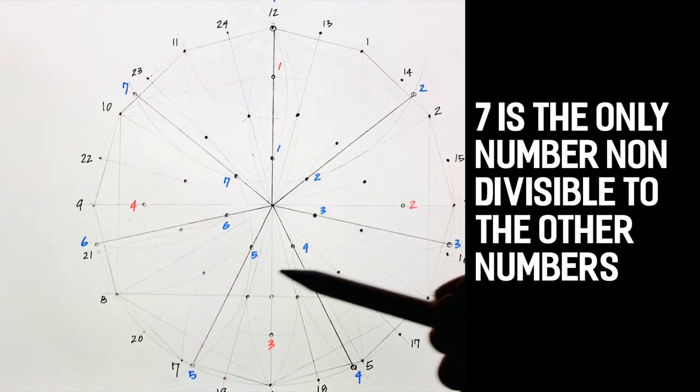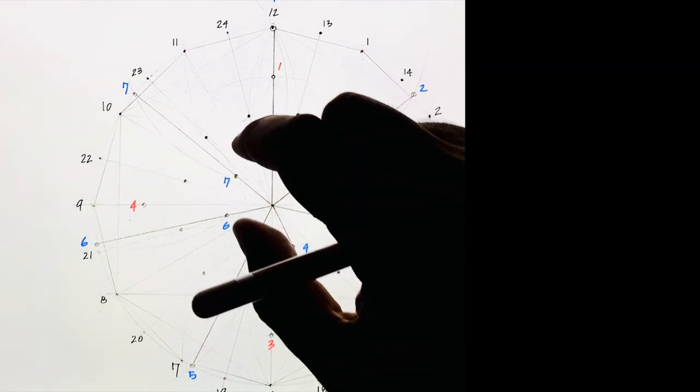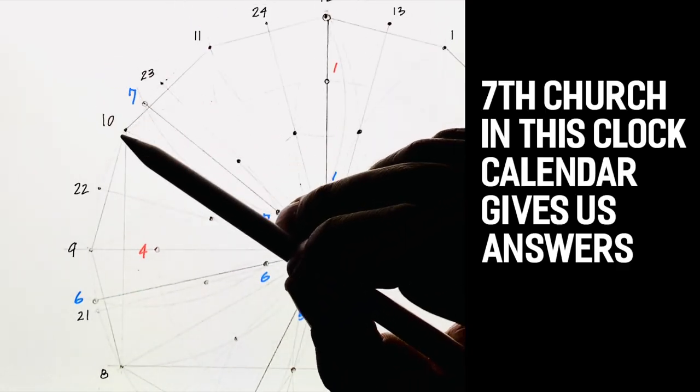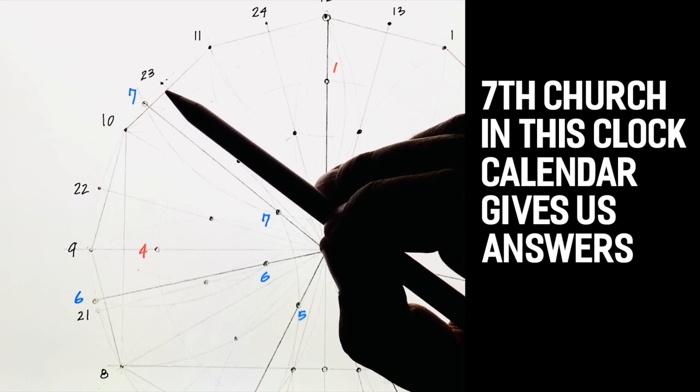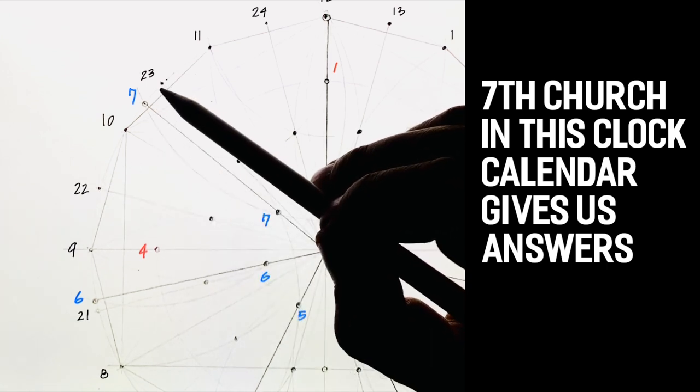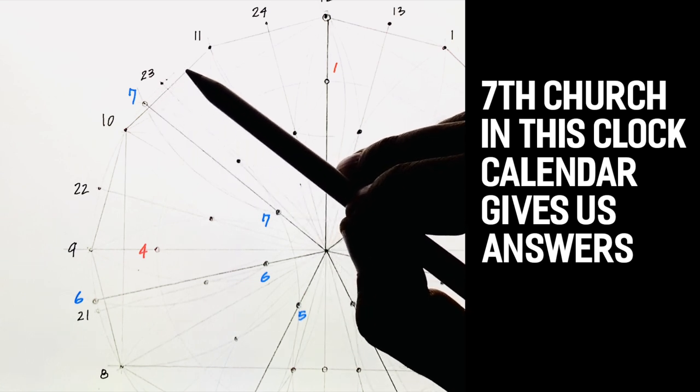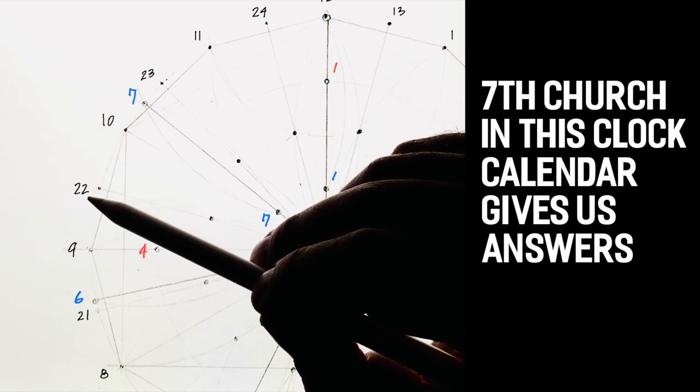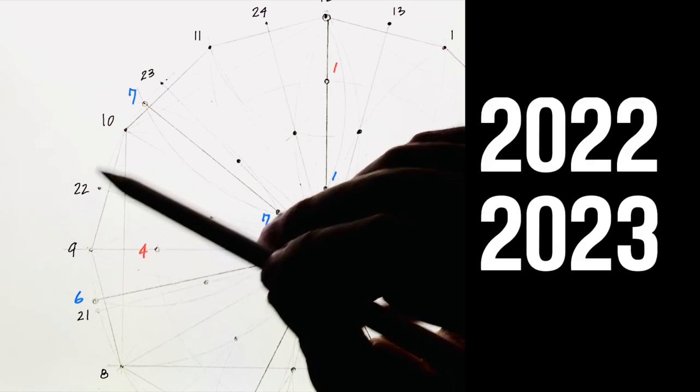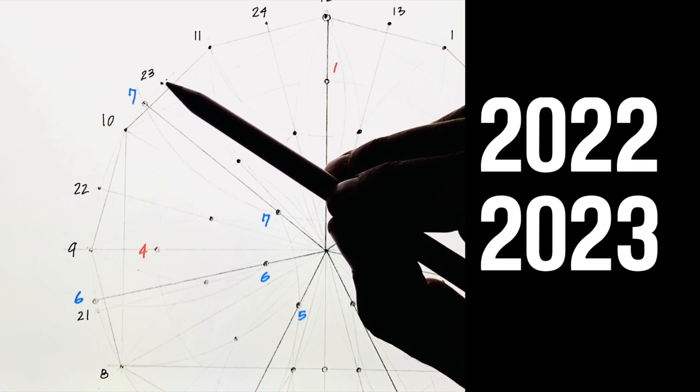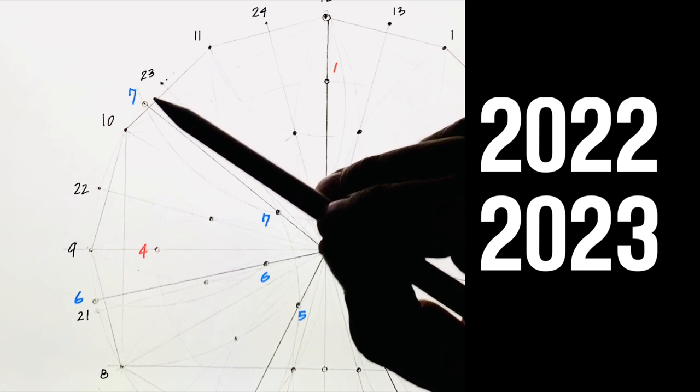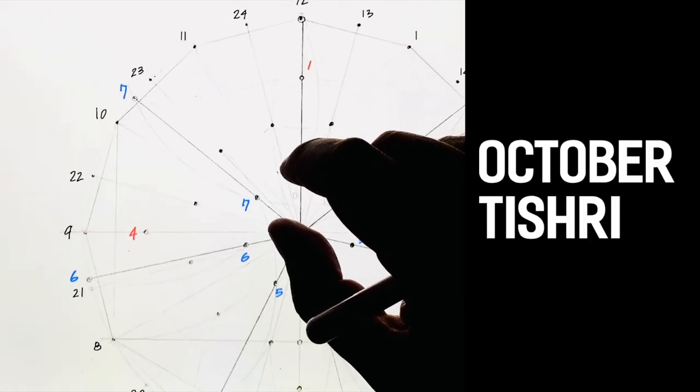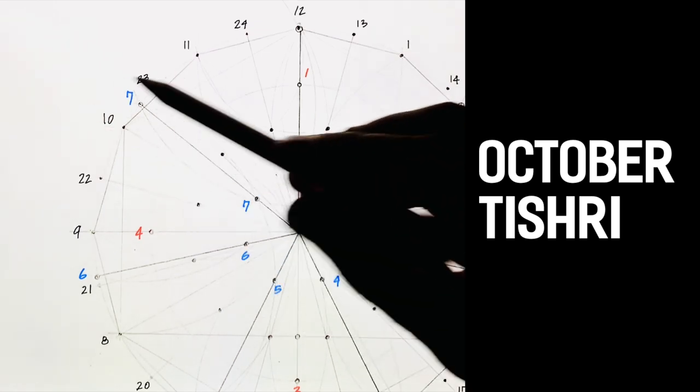That by the time the seven churches are completed in this calendar, where is number seven landing? Right there. That's between 10 and 23. And it's between 22 and 23, before we turn over to start the cycle again. Why is that important? Does the number 22 tell you anything? 2022. Does the number 23 tell you anything? 2023. Does the number 10 tell you anything? I am not telling you what it is. I don't know what it is. I know the Holy Spirit is pointing this to me.